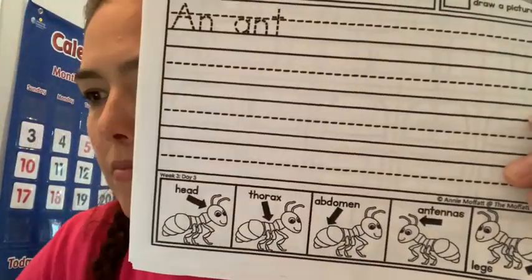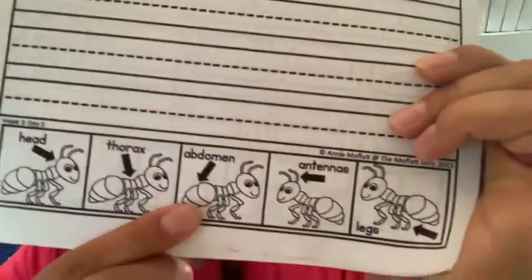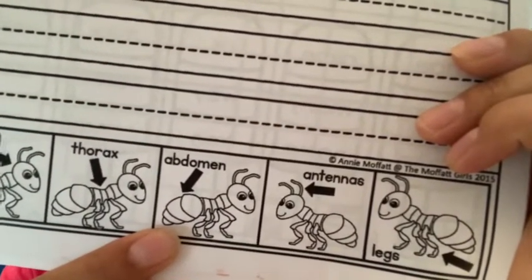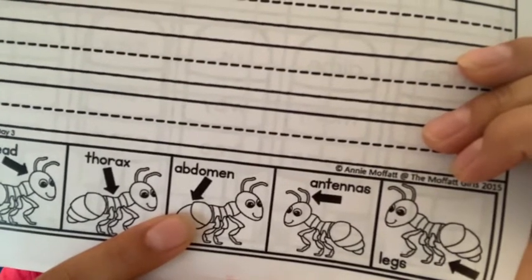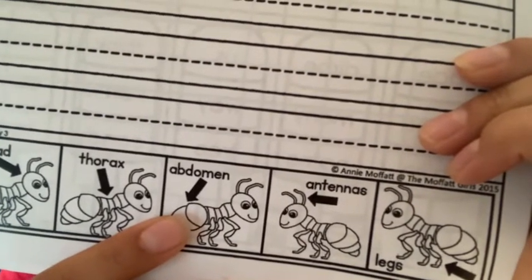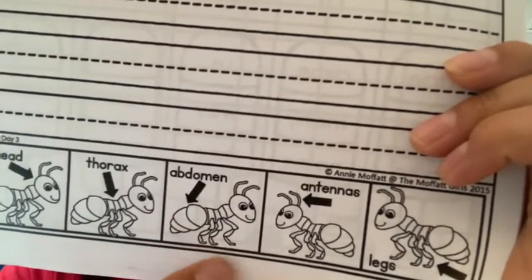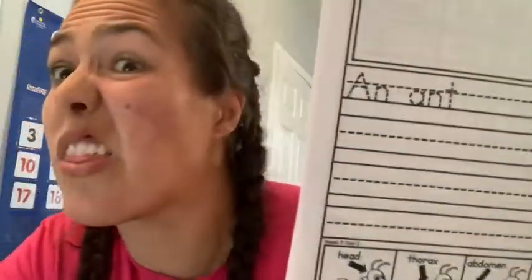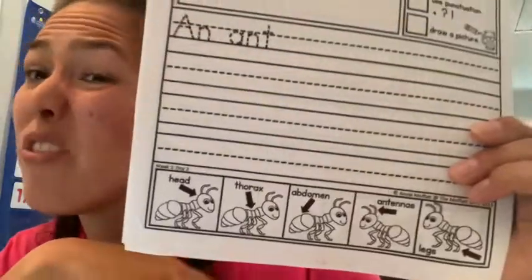In the abdomen, near their tail area — this is an important body part that contains their heart, their organs, and their digestive system, so all the stuff in their stomach. It also has their bottom — ants poop too, everybody does!